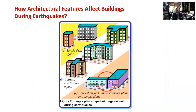Now let's look at the horizontal layout or plan of the building. In general, simple geometry in plan, as shown in Figure 2a, has performed better during strong earthquakes. Buildings with re-entrant corners such as U, V, H, and plus shapes, as shown in Figure 2b, have sustained significant damage during earthquakes. The common solution is to make buildings in two parts, as shown in Figure 2c. For example, this L-shaped building can be broken into two rectangular plans using a separate joint at the junction.